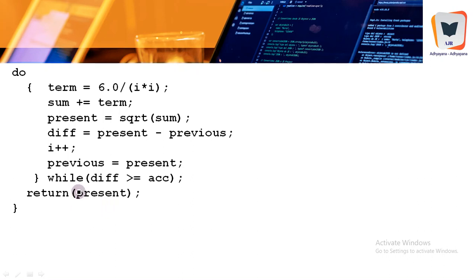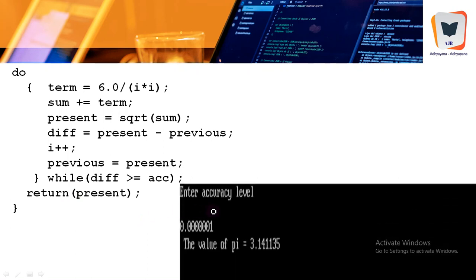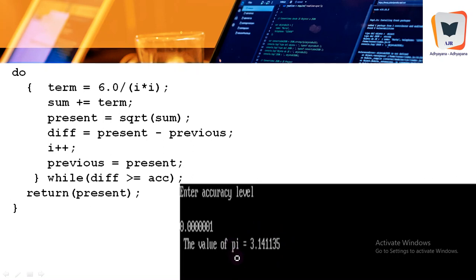The program has been executed. Entering accuracy level 0.0000001 (which can also be written as 1.0e-7 in scientific notation), the output shows the value of pi equal to 3.14135. This value is obtained by the find_pi function, which simply returns the computed value without receiving any data from the calling function.